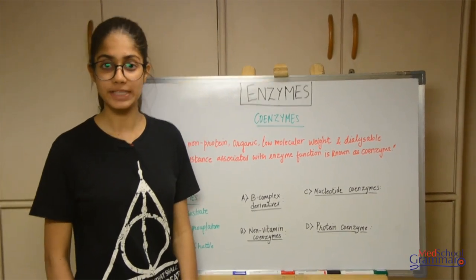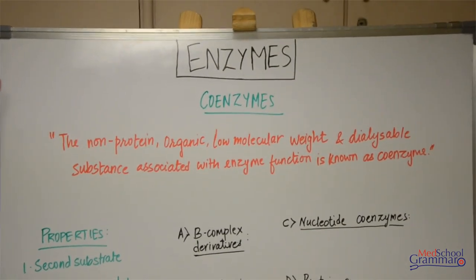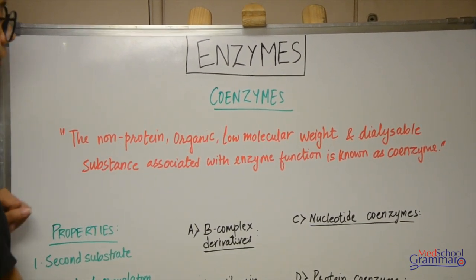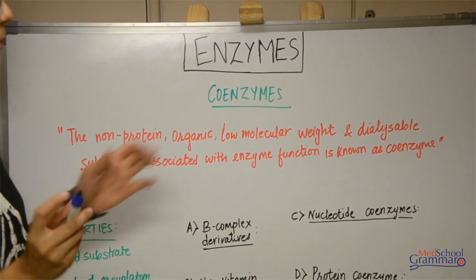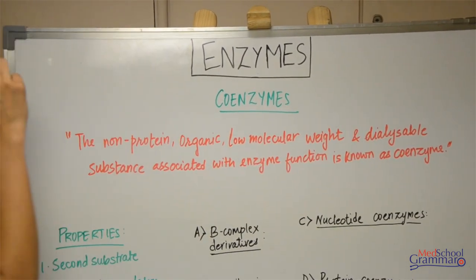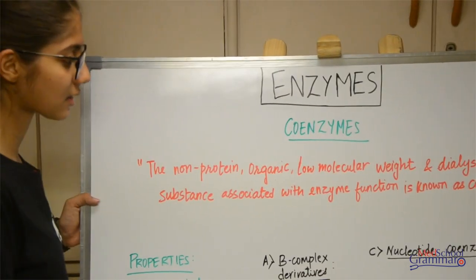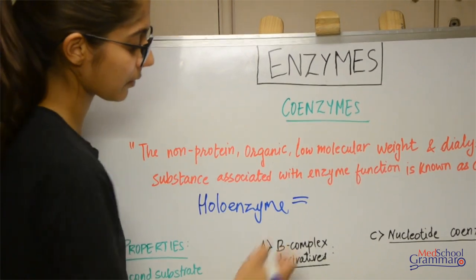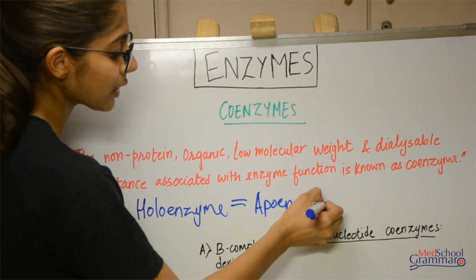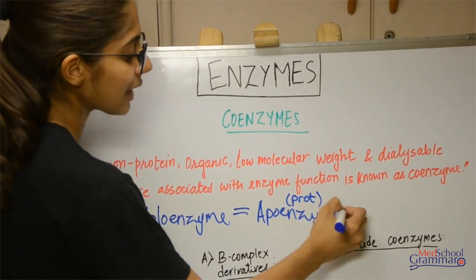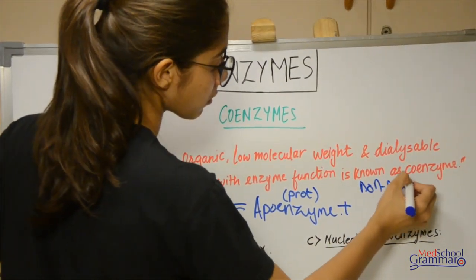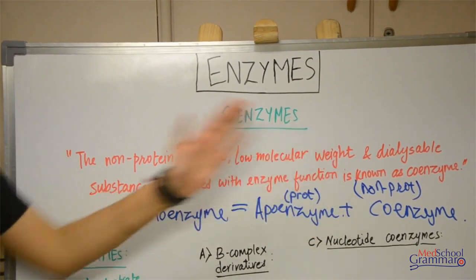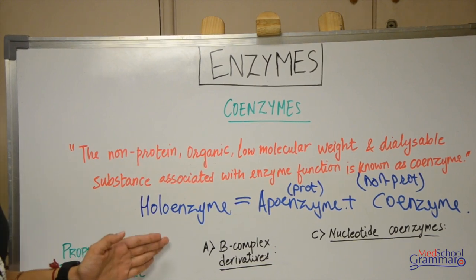Let's move on to the last topic for today — coenzymes. Coenzymes are non-protein, organic, low molecular weight, dialyzable substances associated with enzyme function. They have a low molecular weight and are separated from the holoenzyme by dialysis. Holoenzyme is formed by the apoenzyme — the protein part — plus a non-protein part, which is your coenzyme. So coenzyme plus apoenzyme forms the holoenzyme, which is your functionally active enzyme.